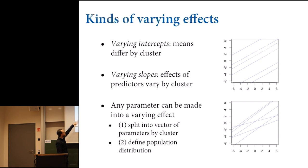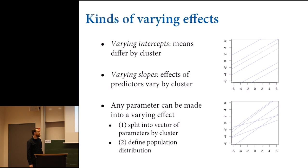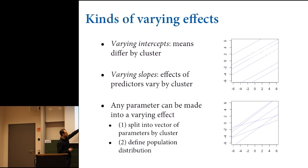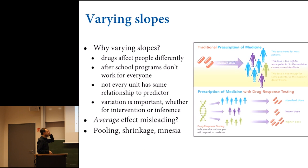The general principle is: there's nothing special about intercepts or slopes — it's just any parameter. If you have clusters in the data with repeat observations on some units, you can take any parameter that applies to those units, split it into a vector of parameters one for each unit, and estimate them with pooling. The recipe: split that parameter into a vector one per cluster, then define a population distribution forming a common prior, estimated from the data.